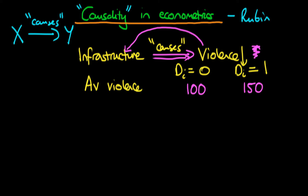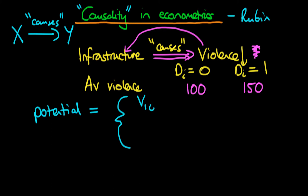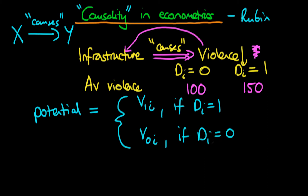Using this example, we're going to talk about the conditions under which we can say that infrastructure spending actually causes a decline in violence. To do that, we need to define for each given state the level of potential violence. The potential violence for any state can take on one of two values: V1_i if that state did receive infrastructure spending (i.e., D_i equals one), and V0_i if D_i equals zero. For each state, we don't observe both outcomes — we only observe one. But if we could observe both, the difference between them would represent the causal effect of infrastructure spending.